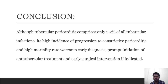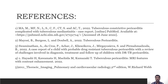Although tubercular pericarditis comprises only 1-2% of all tubercular infections, it has a high incidence of progression to constrictive pericarditis and high mortality, underscoring the importance of early diagnosis, prompt initiation of anti-tubercular treatment and early surgical intervention. These are my references. Thank you.